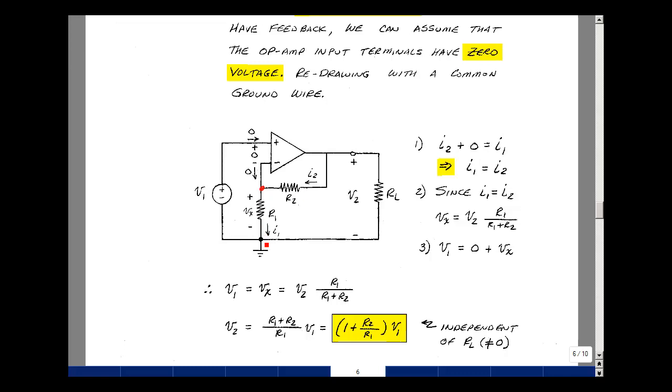Now since I have the same current, then I can apply voltage divider rule with an input of V2 and an output of V sub X. So V sub X is V2 times R1 over R1 plus R2.